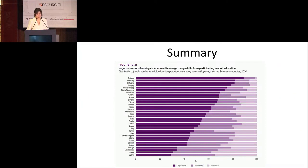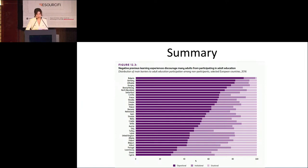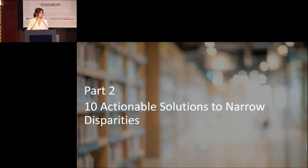This statistic from UNESCO shows that negative previous learning experiences discourage many adults from participating in adult education. That's why some of them are discouraged from furthering their education, while others face structural limits. So we have to take a look at our educational system right now. Part 2: 10 actionable solutions to narrow disparities.